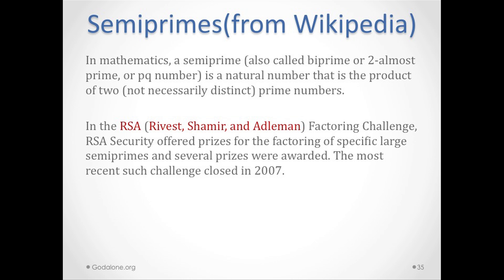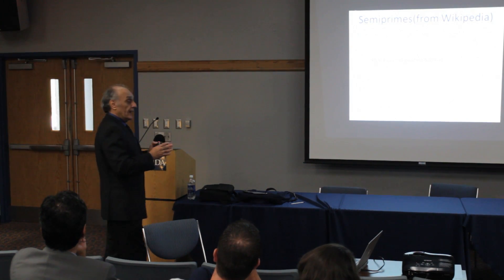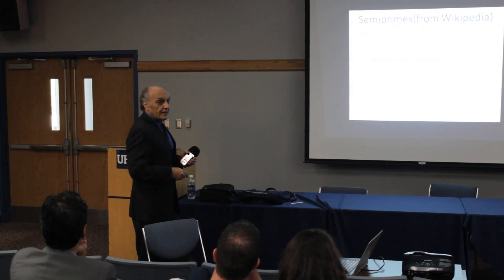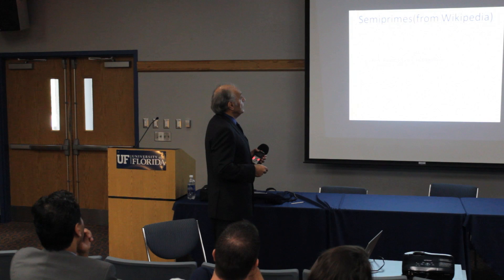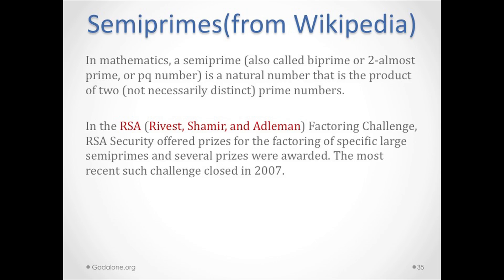Semiprimes — also called bi-primes, two-almost-primes, or pq numbers — are natural numbers that are the product of two not necessarily distinct prime numbers. This relates to the RSA factoring challenge, created by Rivest, Shamir, and Adleman for banking security and coding of unmanned vehicles. You don't want anyone to break the code when communicating with a UAV or missile. RSA Security offered prizes for factoring specific large semiprimes; the most recent challenge closed in 2007.